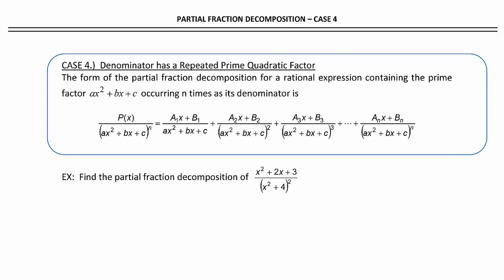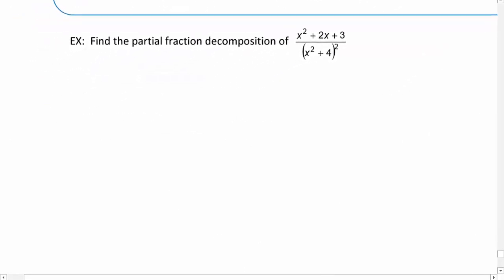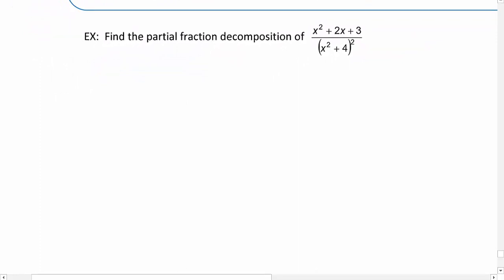Let's find the partial fraction decomposition of x squared plus 2x plus 3 over x squared plus 4 quantity squared. Anytime I have a quadratic factor in the denominator, I still try to factor it first. But x squared plus 4 is not factorable. So I'm going to say this is prime and I'm going to go the other direction with it.